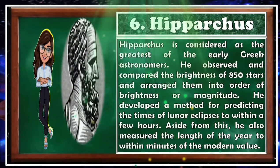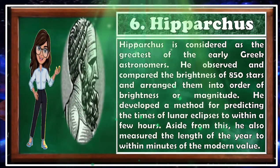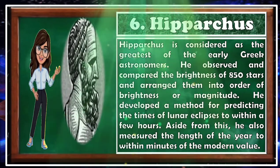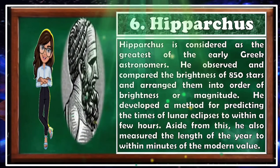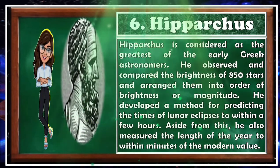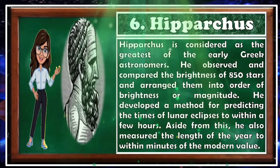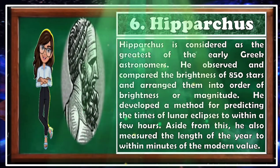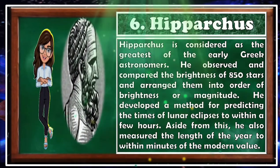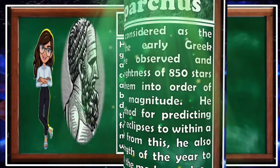Next is Hipparchus, considered the greatest of the early Greek astronomers. He observed and compared the brightness of 850 stars, and arranged them in order of brightness or magnitude. He developed a method for predicting the times of lunar eclipses to within a few hours, and also measured the length of the year to within minutes of the modern value.